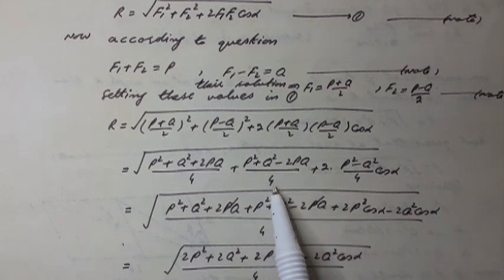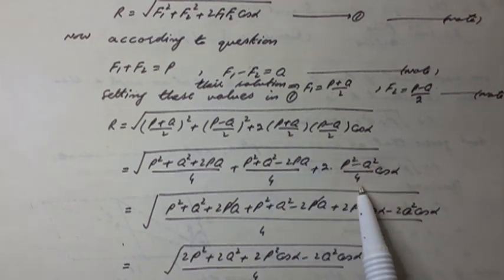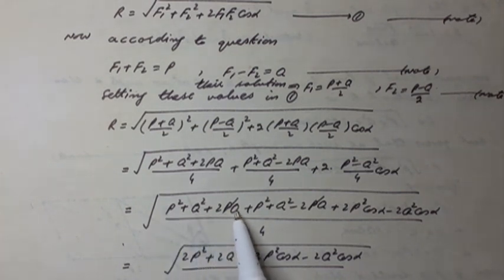Plus 2 and p squared minus q squared over 4 cos alpha under root. And it can be written as p squared plus q squared plus p squared plus 2p squared plus 2p squared cos alpha minus 2q squared cos alpha over 4.